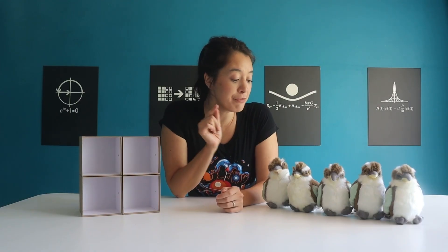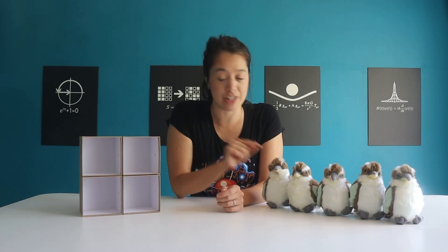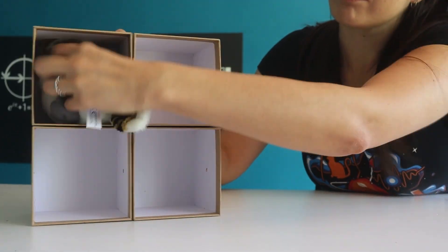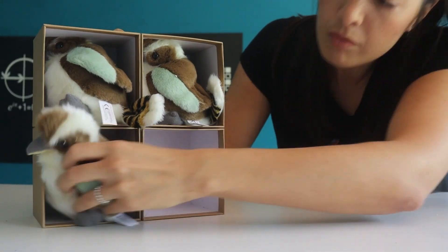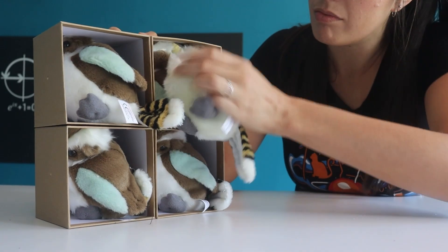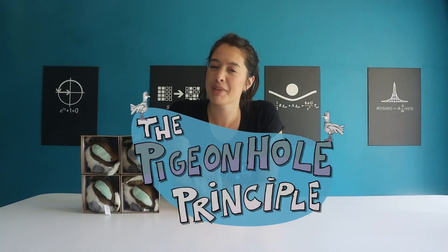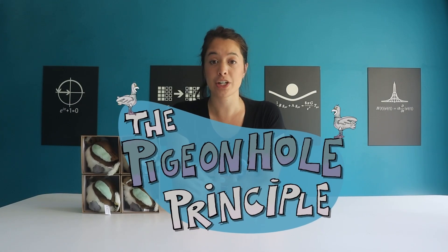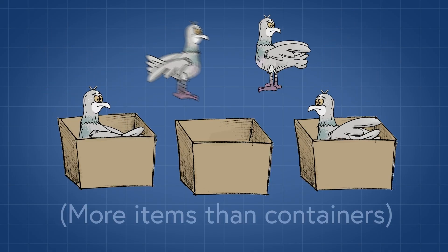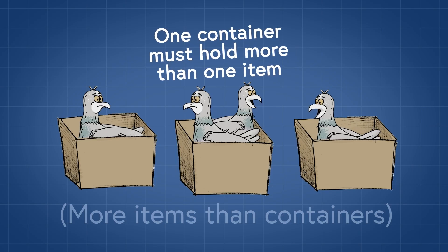Here's a super simple argument. If I have five Australian pigeons and four pigeonholes, and I want to put each pigeon into a pigeonhole, there must be at least two pigeons in the same pigeonhole. This is called the pigeonhole principle. More generally, it states that if you have more items than containers and you want to put every item into a container, there must be at least one container with more than one item in it.